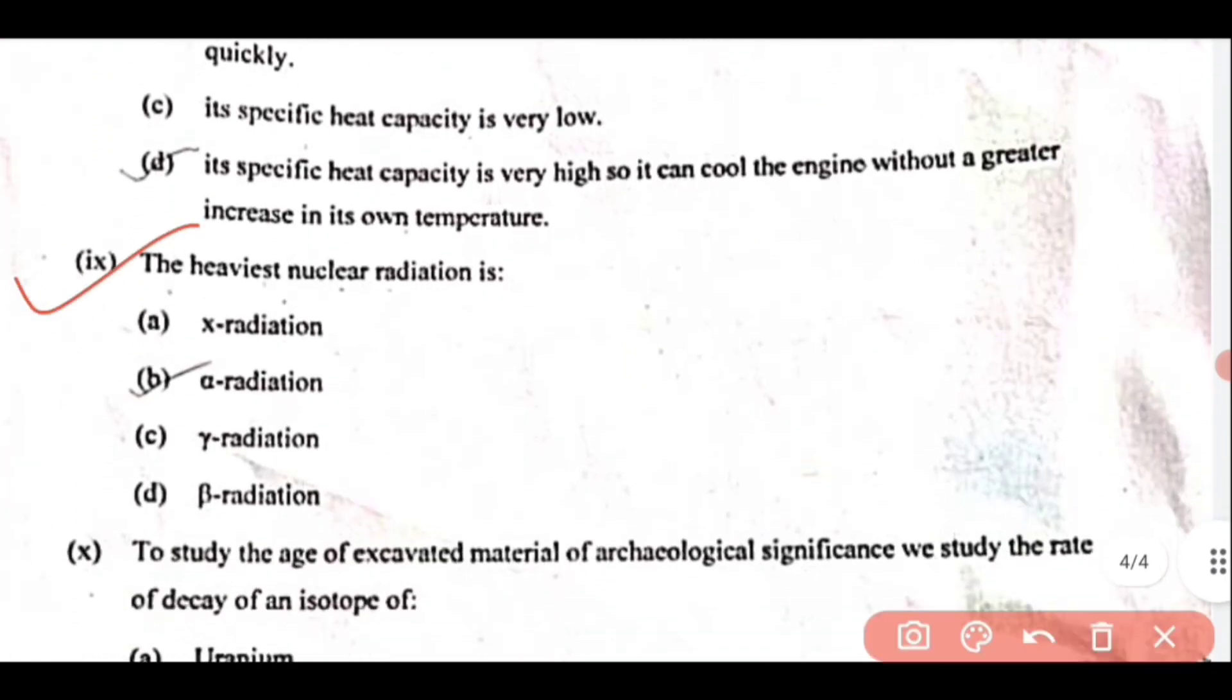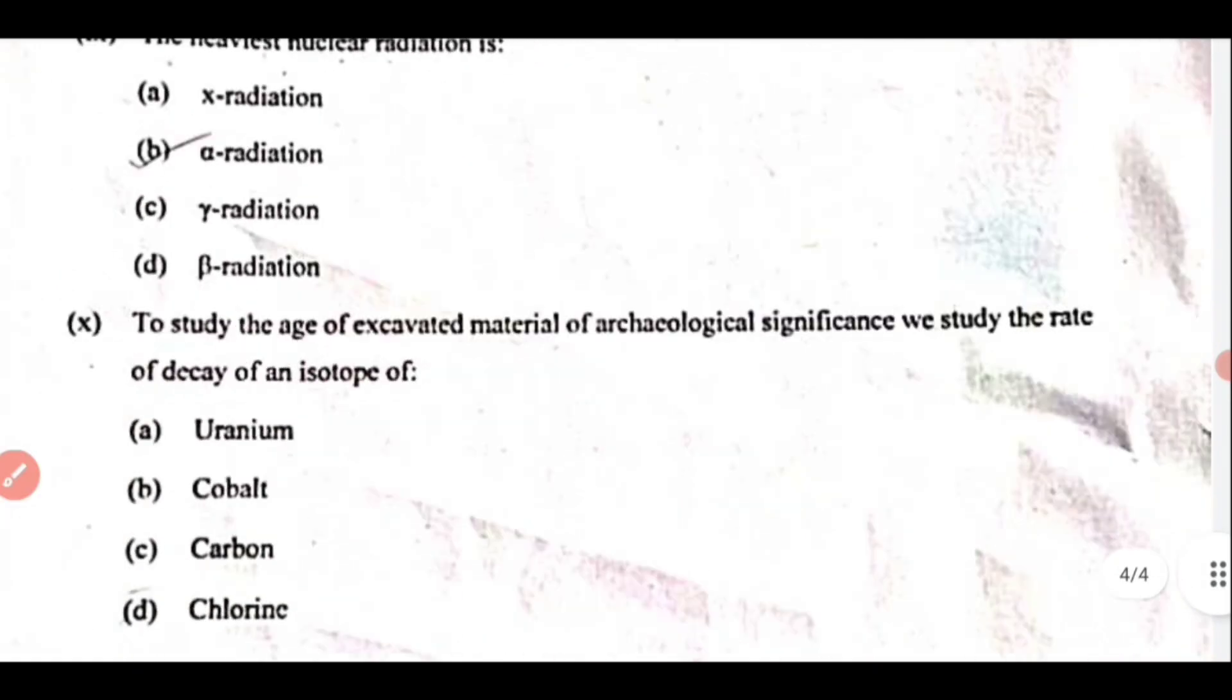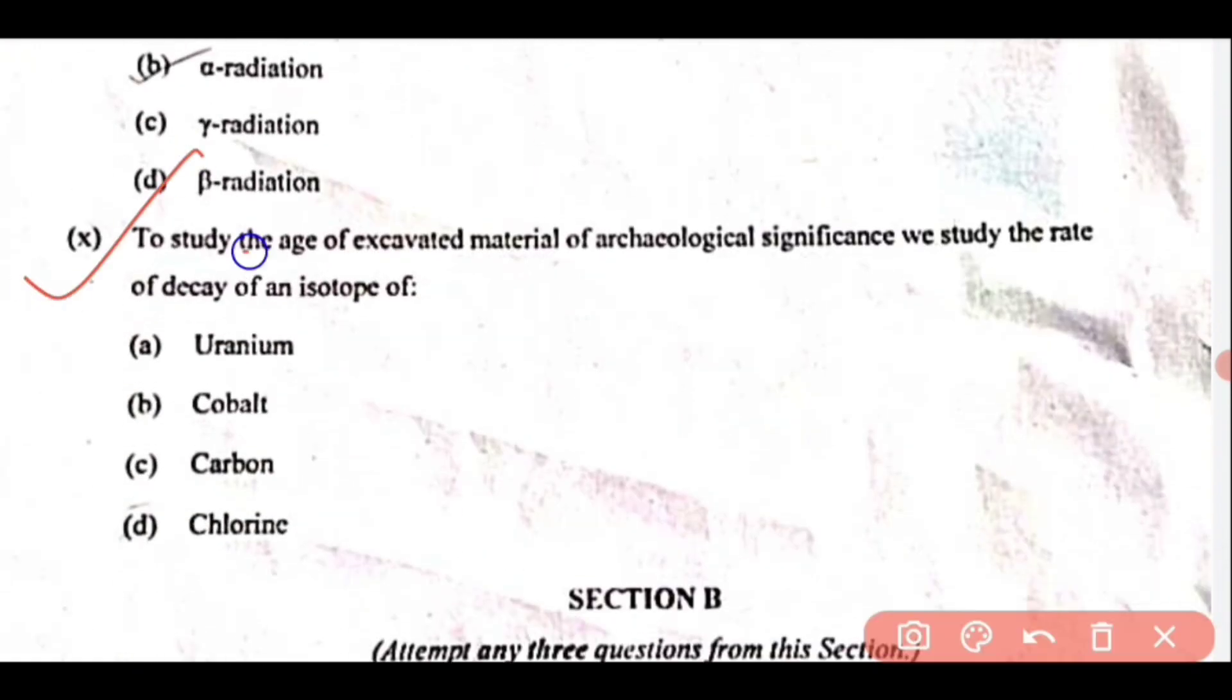Question 9: The heaviest nuclear radiation is alpha radiation, so option B is correct. Question 10: To study the age of excavated material of archaeological significance, we study the rate of decay of an isotope of carbon. So option C, carbon, is correct.